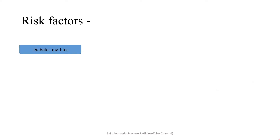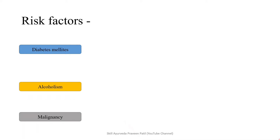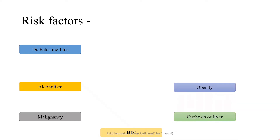Coming to the risk factors: diabetes mellitus, where the patient's immune condition gets compromised; chronic alcoholism; malignancy. These are conditions in which the immune system is reduced. Other examples include HIV, cirrhosis of the liver, obesity, and malnutrition. In all these conditions, the immune system decreases, and if any infection occurs, it may turn into a polymicrobial infection leading to Fournier's gangrene.